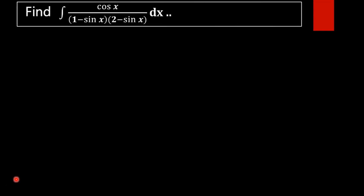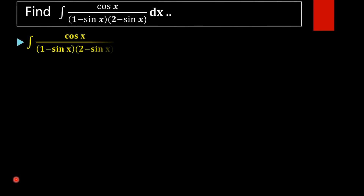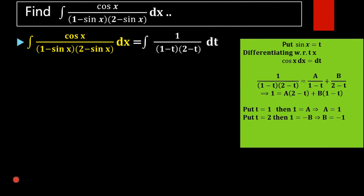In order to find the value of this integral, we are going to use the substitution method to make this integral into an integrable form. We take sin x equal to t. On differentiating with respect to x, we get cos x dx equal to dt. We can rewrite cos x dx as dt, and 1 minus sin x as 1 minus t.